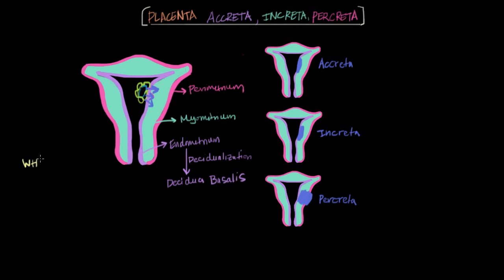All right, so why does this happen? How do you get a defective decidua basalis? A lot of times it's a result of some prior surgery in the uterus. So for example, a history of a C-section, a history of a uterine curettage, which is a type of procedure in which the lining of the uterus is scraped away for a variety of different reasons.